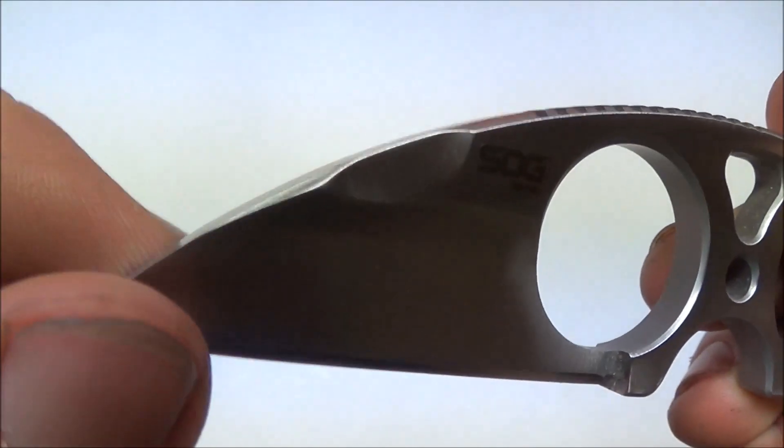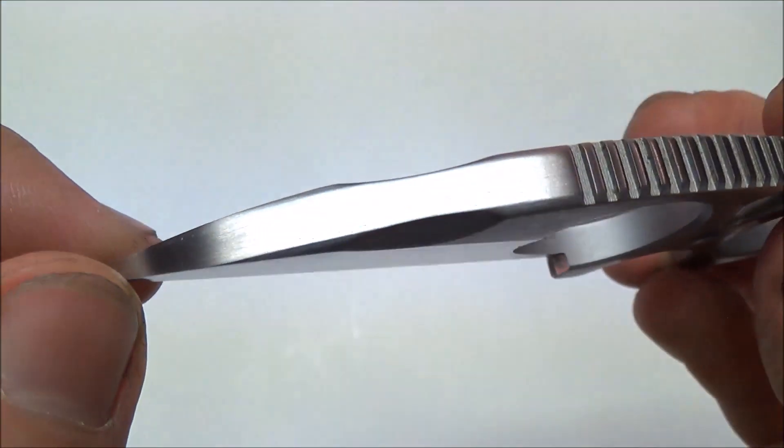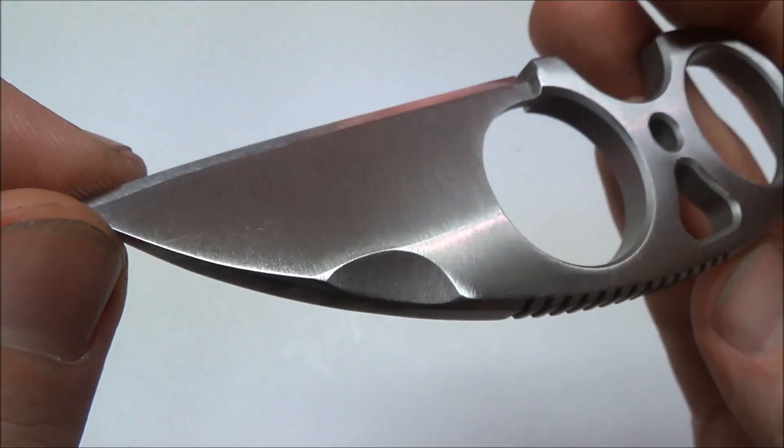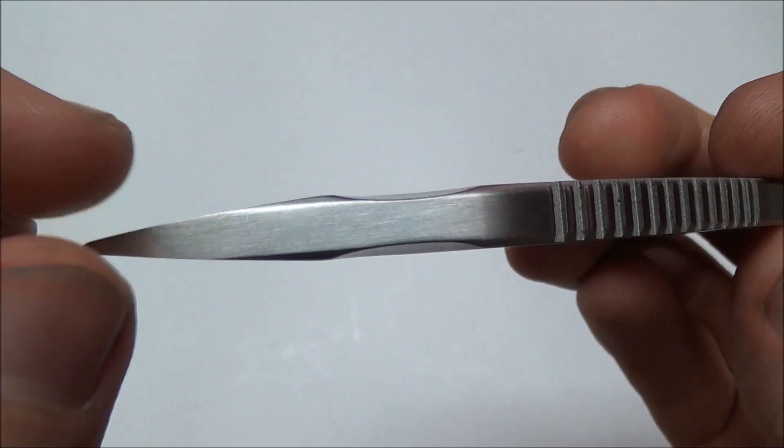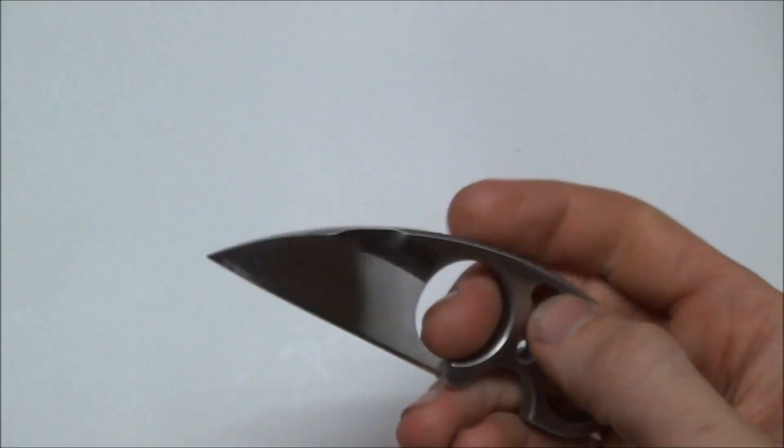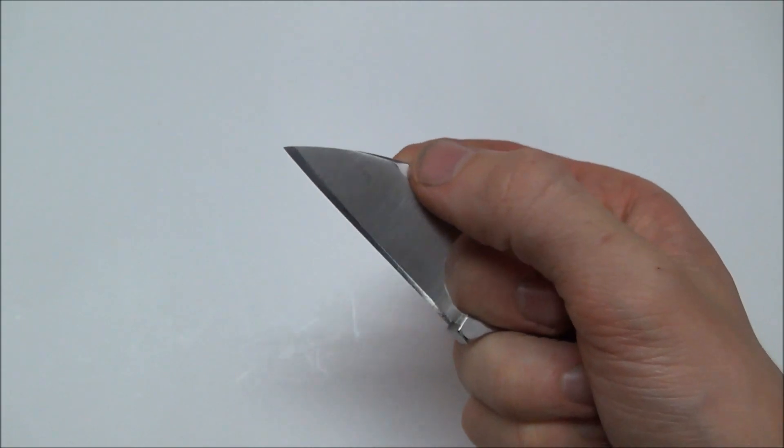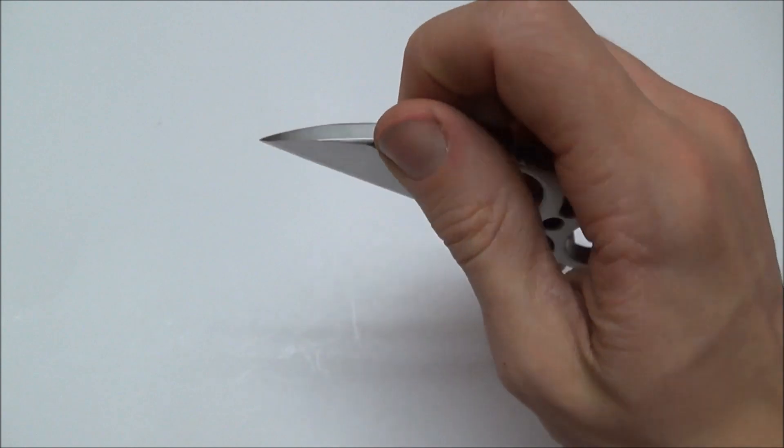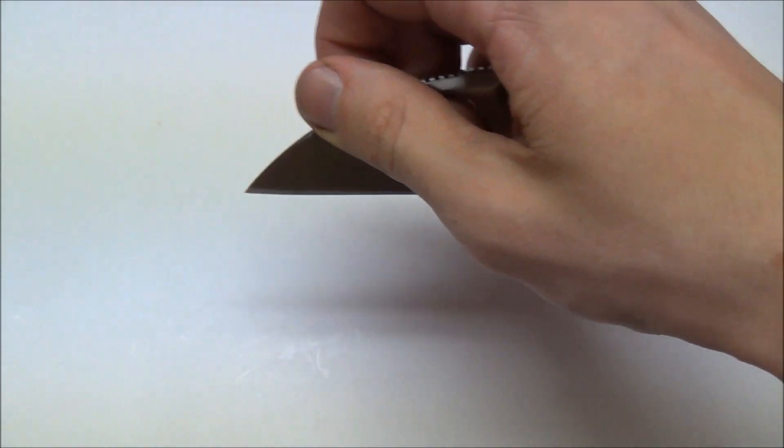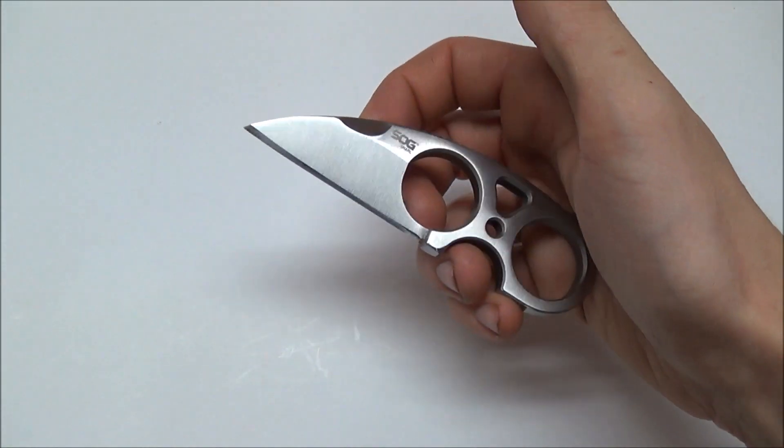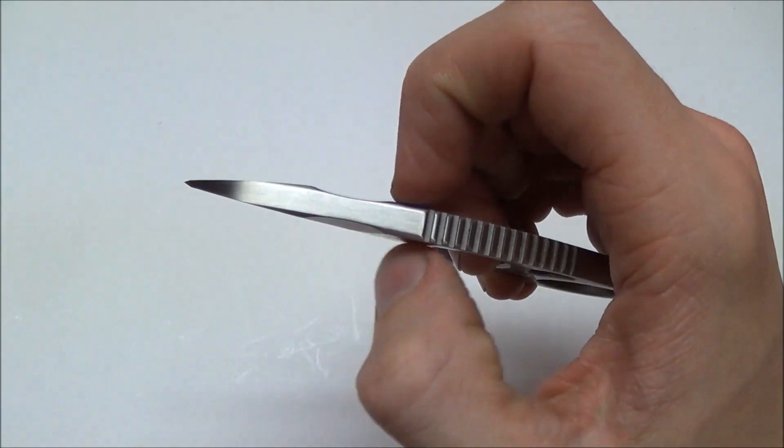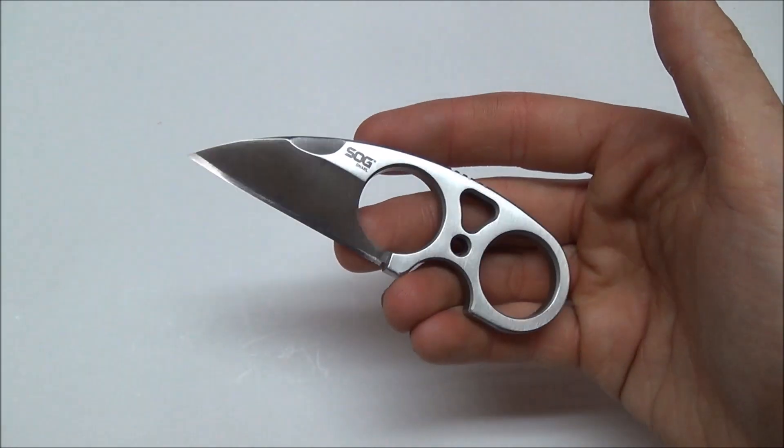And then you have these two little cutouts right here, of course, midway through the spine. Cosmetically, it looks pretty cool. I think what it's supposed to be is a pinching point for like a pinch grip. I've never used it like this. I don't think it's that necessary, but you can use it if you'd like. It is there. And aesthetically, it is kind of pleasing.